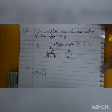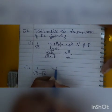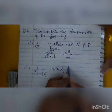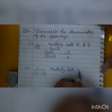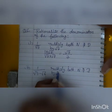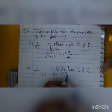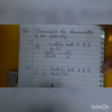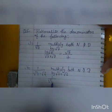Again, for 1 upon root 7 minus root 6, multiply both numerator and denominator by root 7 plus root 6. Note: minus here, plus there.